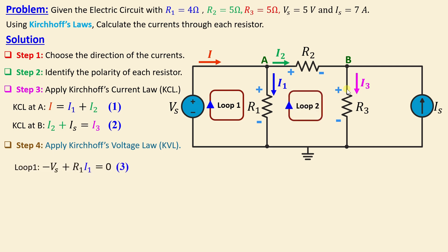In loop number 1, we can write negative Vs plus R1 I1 is equal to 0. We obtain finally negative 5 plus 4 I1 is equal to 0.